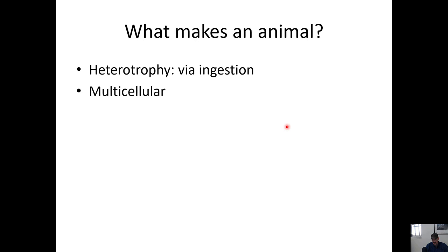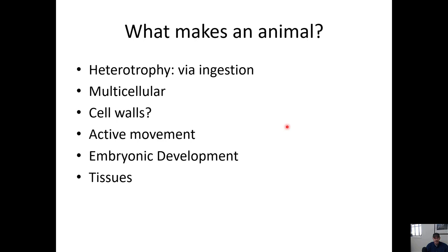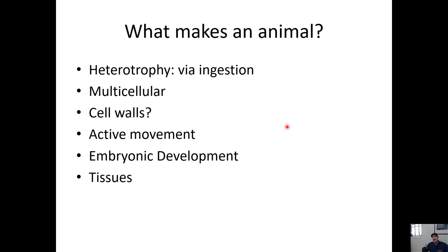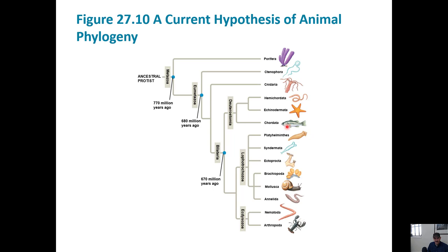They're multicellular. There are no single-celled animals. If it's a single-celled animal-like organism, it's some kind of protist. They have typically active movement — they actively move, usually with some kind of muscle twitching. They develop from embryos, they have embryonic development. They have tissues, typically — not all; we're going to look at an exception in a minute. So those are some of the things we might list to describe what an animal is.